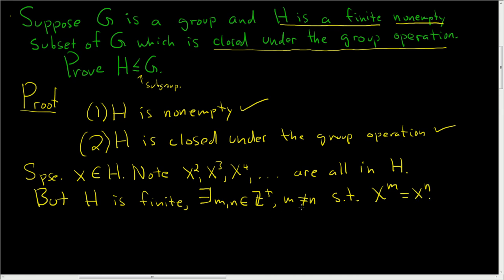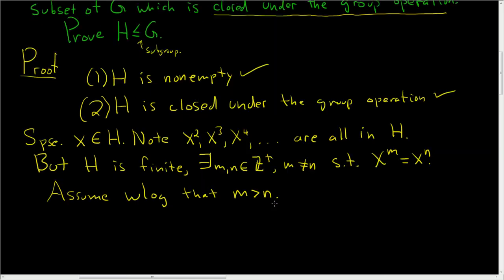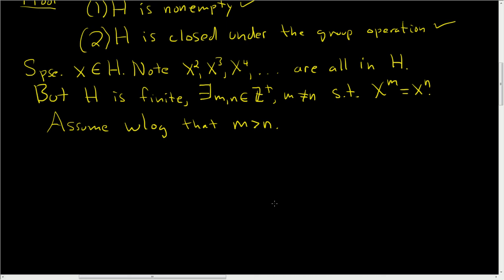Now, if M is not equal to N, then either M is bigger than N or M is less than N. So let's assume, without loss of generality, that M is bigger than N. So we somehow need to incorporate the inverse into all of this. So let's do it in steps. First, let's take this and rewrite it. So note, we can rewrite that as X to the M minus N equals E.